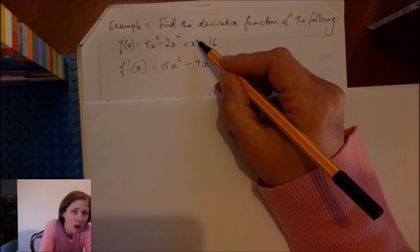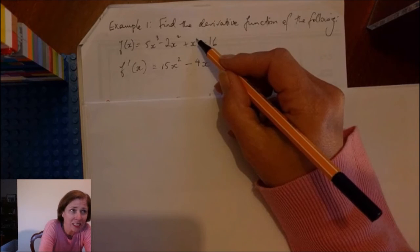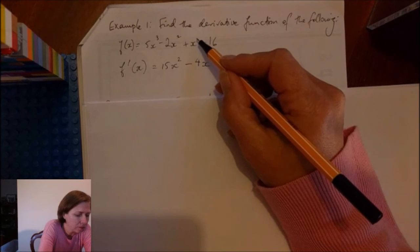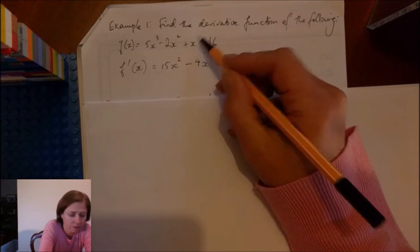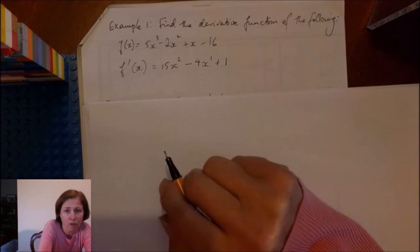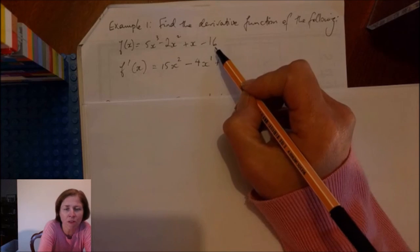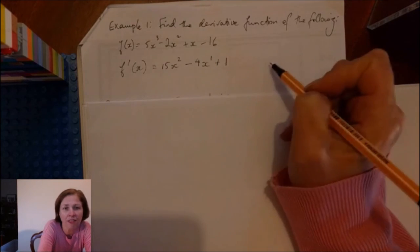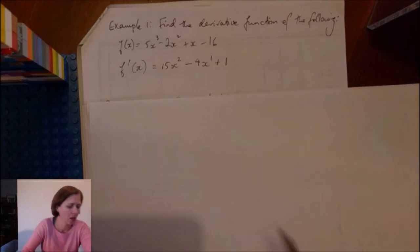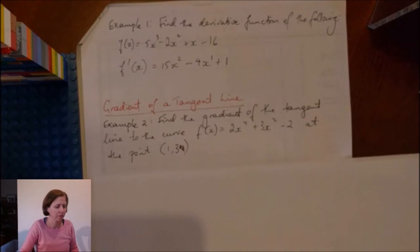The power is 1. If I subtract 1 from that, I get x^0, which is 1. So really here I've got 1 times 1, which is 1. This is a constant. The derivative of constant is 0. So there's nothing else. Okay. All right. Sorry.